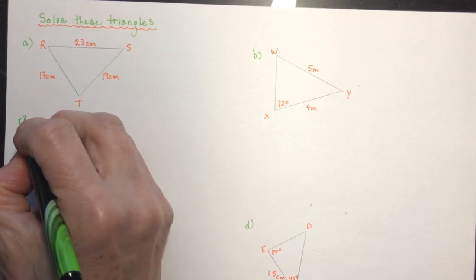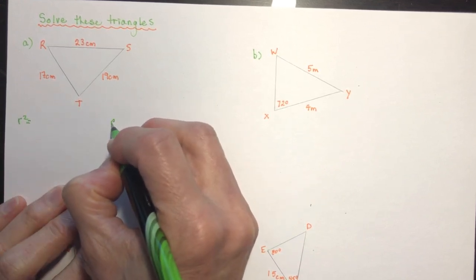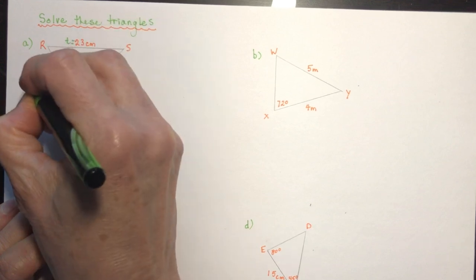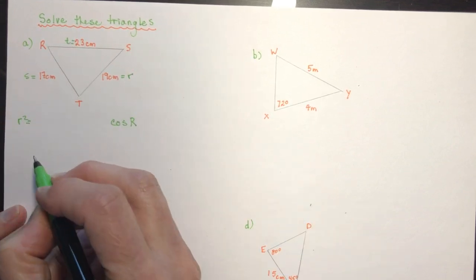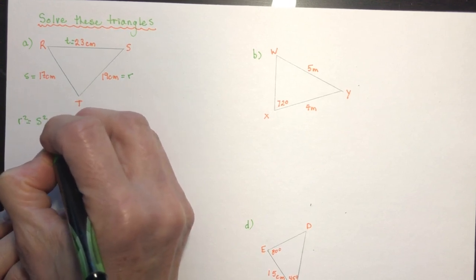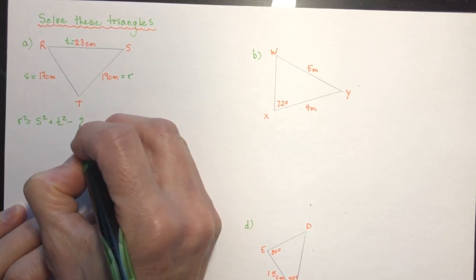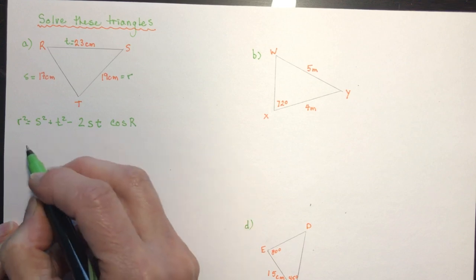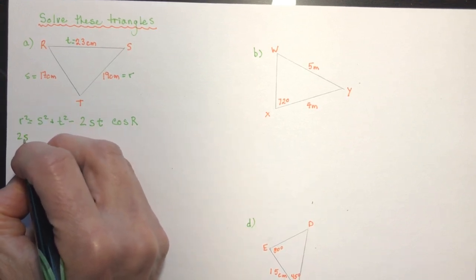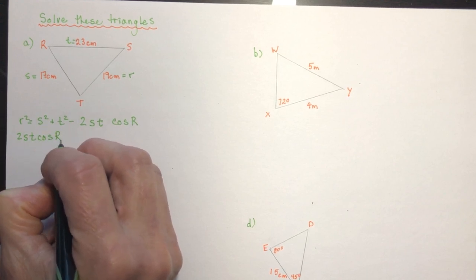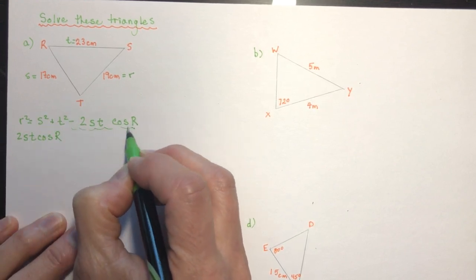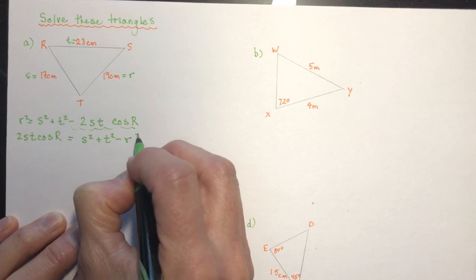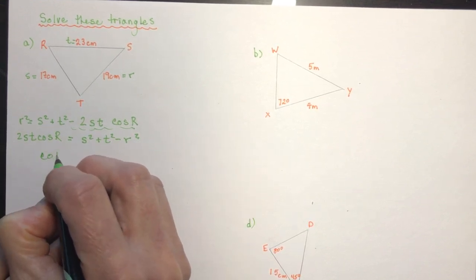R squared equals S squared plus T squared minus 2ST cosine of R. Rearranging: cosine R equals (S squared plus T squared minus R squared) divided by 2ST. Remember, the sides are labeled opposite their vertices.